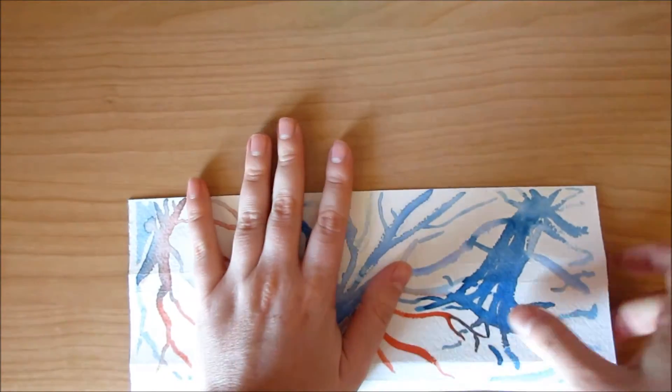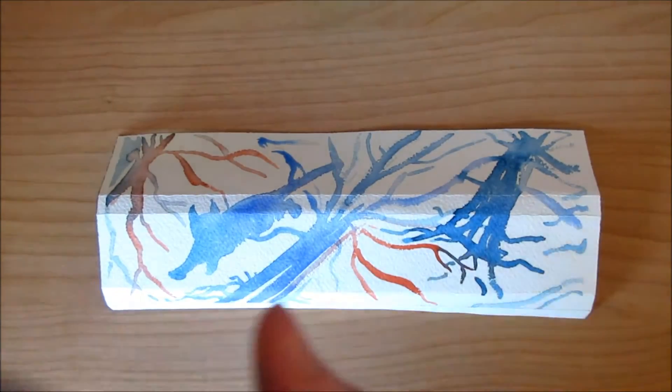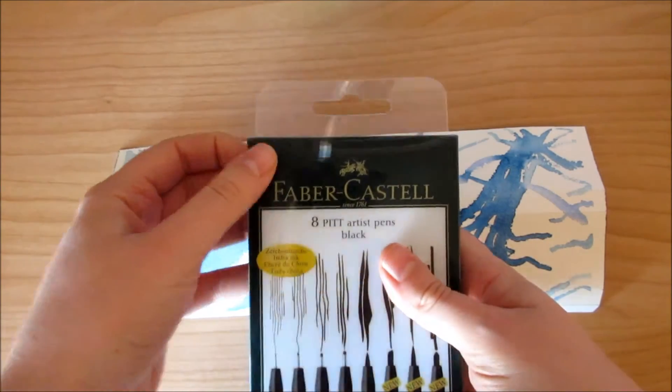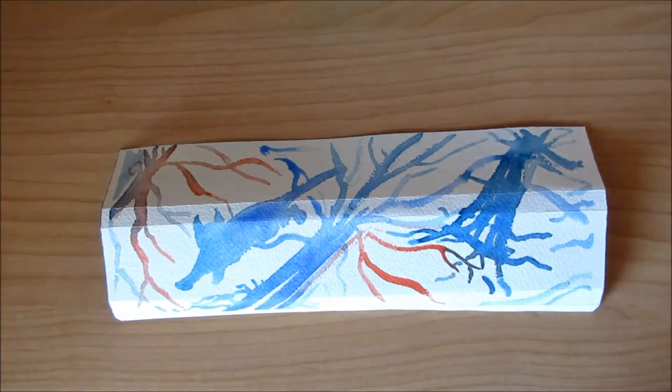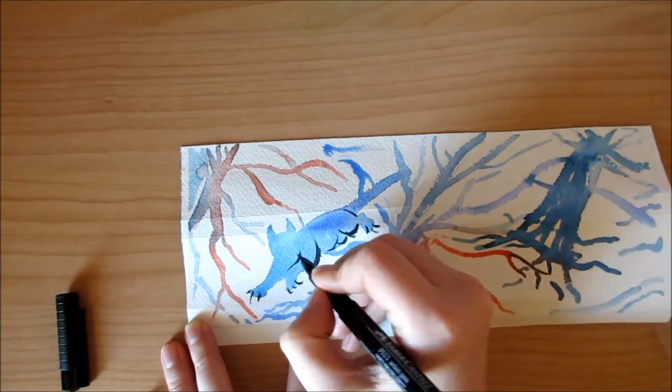The next thing is unfold it and do the black lines because I didn't trust my pen not to smear when I bent the paper. So I did the bending before.